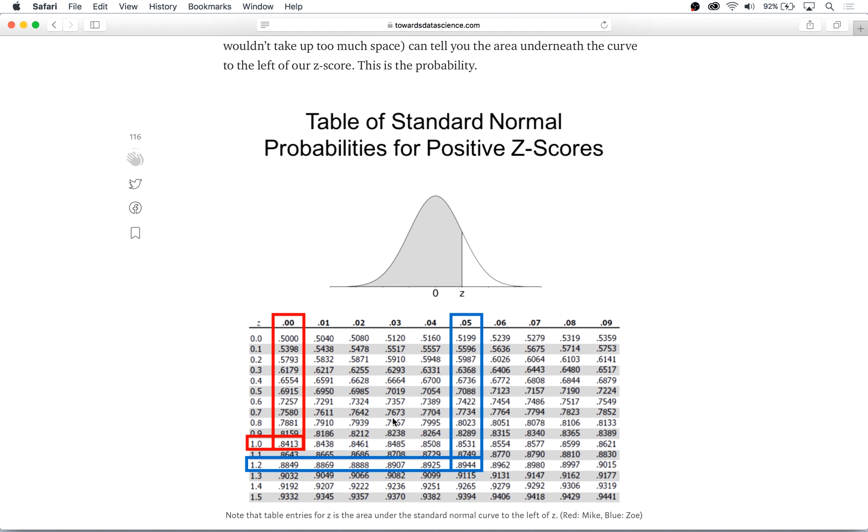We can do something similar for Mike and we start at the row label of 1.0, we find where it intersects with the column label of 0.00 and we find that the proportion of people who scored worse than Mike is 0.8413.